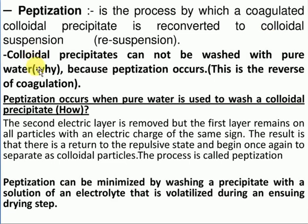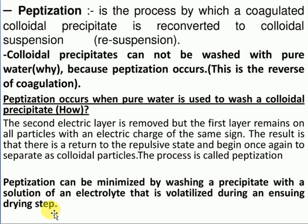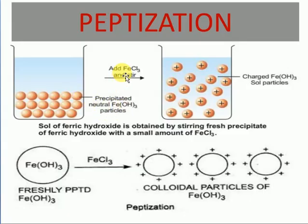Peptidization is the process by which a coagulated colloidal precipitate is reconverted into a colloidal solution. One important point: colloidal precipitates cannot be washed with pure water, because washing with pure water causes peptidization. Conversely, to convert a colloidal solution back to a suspension, you remove the dispersion medium by adding a small amount of acetone or water, causing the colloidal particles to settle. Peptidization can be minimized by washing the precipitate with a dilute electrolyte solution.